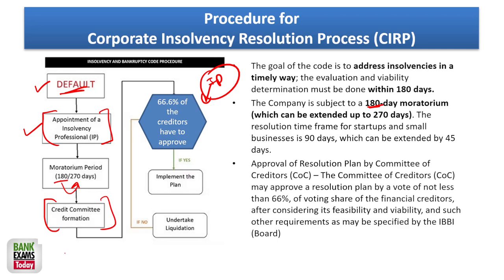A committee of creditors is then formed and they make a decision. There are two options: implement the turnaround or resurrection plan, or undertake liquidation. Resurrection means the business is almost failing and you want to revive it — for example, lowering the EMI from 5 lakh to 1 lakh, or giving a moratorium period of 2 years during which the debtor doesn't need to pay installments.